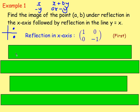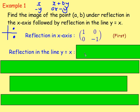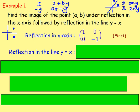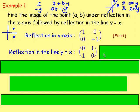Now looking at reflection in the line y = x. If you've got some point (x, y) and reflect it over y = x, it becomes (y, x) — for example, (5, 3) becomes (3, 5). Writing that out: the new first coordinate is 0x + 1y, and the new second coordinate is 1x + 0y. Taking the coefficients gives the matrix: [0, 1; 1, 0].